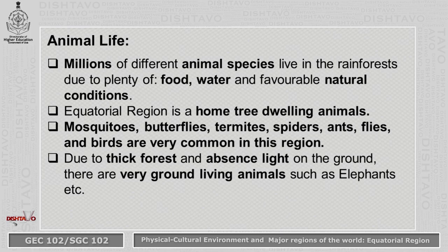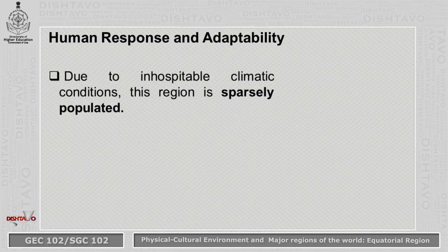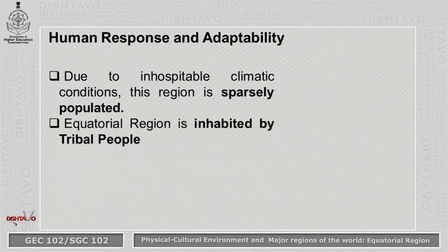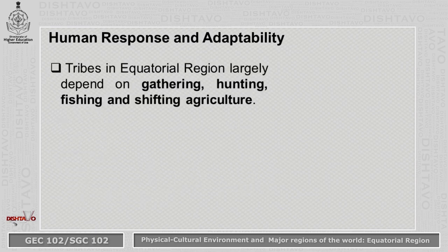Despite inhospitable conditions, the equatorial region is still inhabited by people, but the population is very sparse. It is mostly inhabited by tribal people. The Pygmies of the Congo Basin, the Semangs of Malaysia, and the Native American Indians of the Amazon Basin are the main tribes. These tribes largely depend on gathering, hunting, fishing, and shifting agriculture.